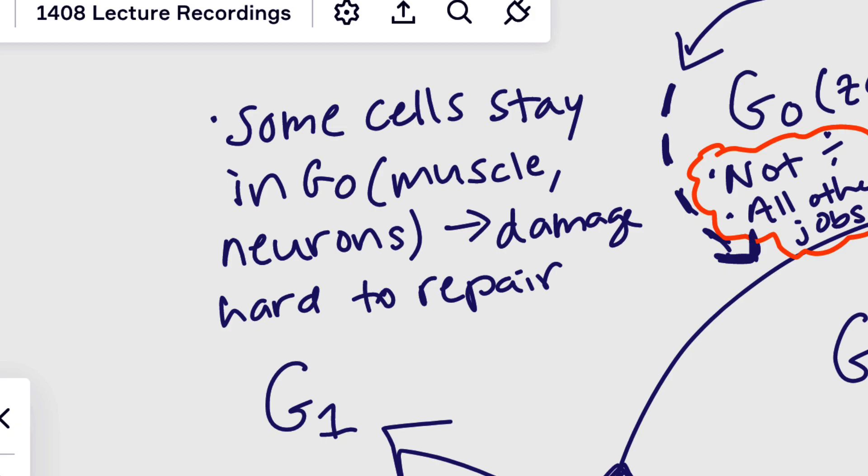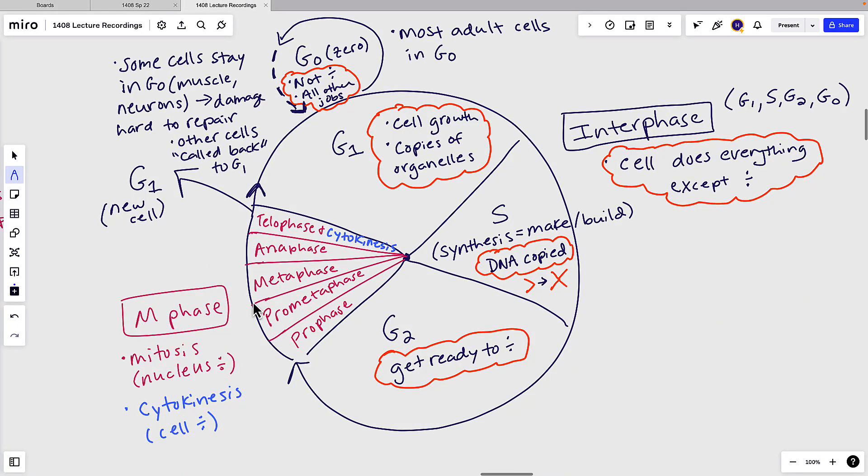So like intestine cells or skin cells, they'll easily get called back from G0 into G1, and then go divide and repair your wound. So other cells can get called back into the cell cycle. We'll say call back to G1. And those are the basics of the eukaryotic cell cycle.